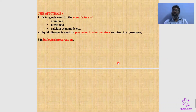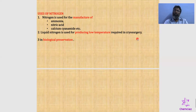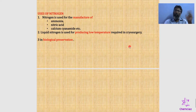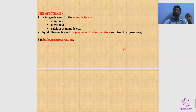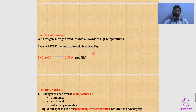Uses of nitrogen: nitrogen is used for the manufacture of many useful compounds — ammonia, nitric acid, calcium cyanamide, and cyanide compounds. Liquid nitrogen is used for producing the low temperatures required in cryogenics and cryosurgery. Cryosurgery means surgery carried out at very low temperatures. Nitrogen is also used in biological preservation.